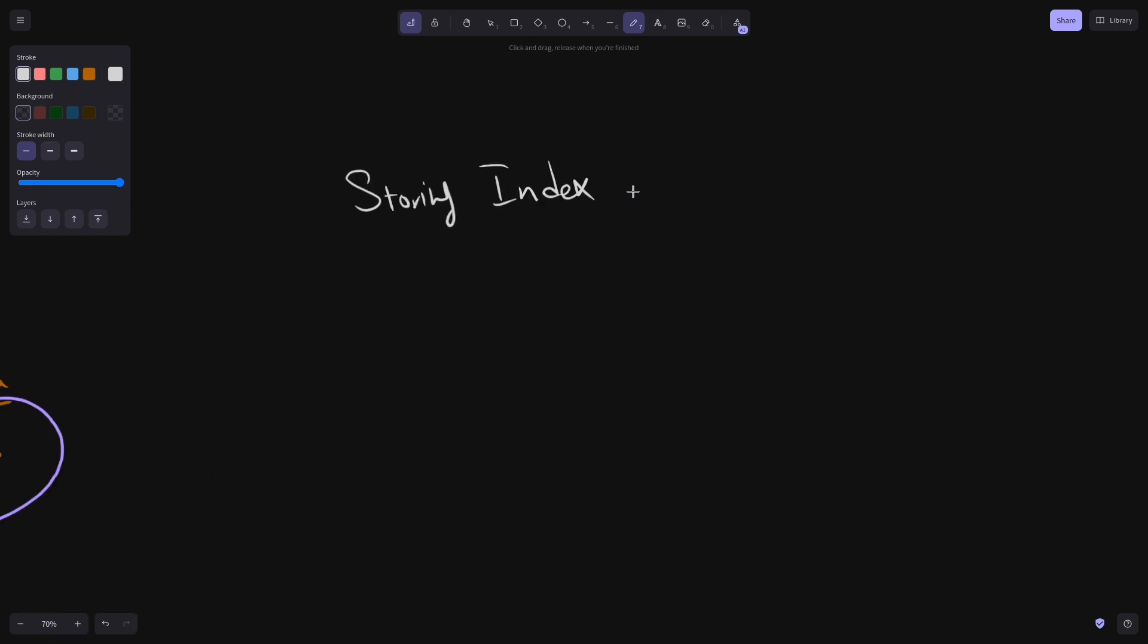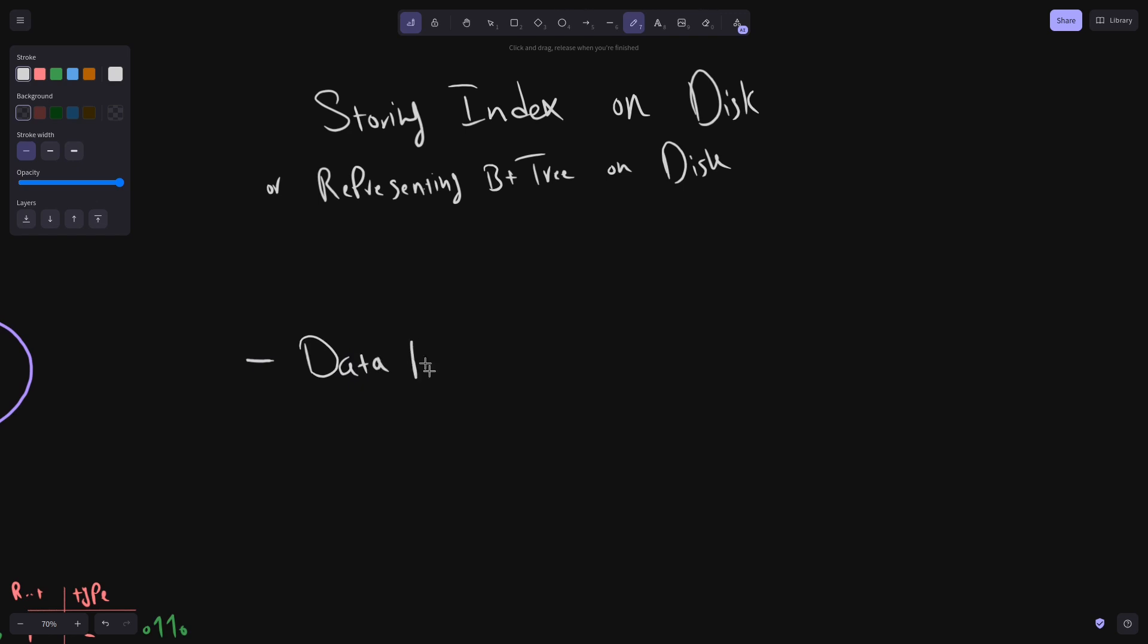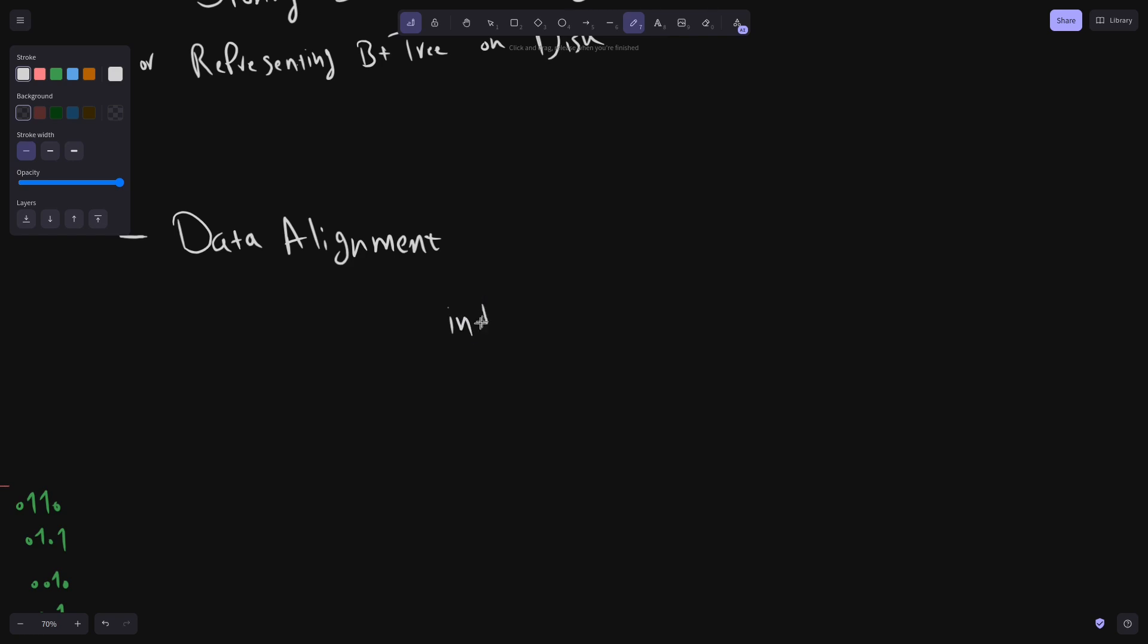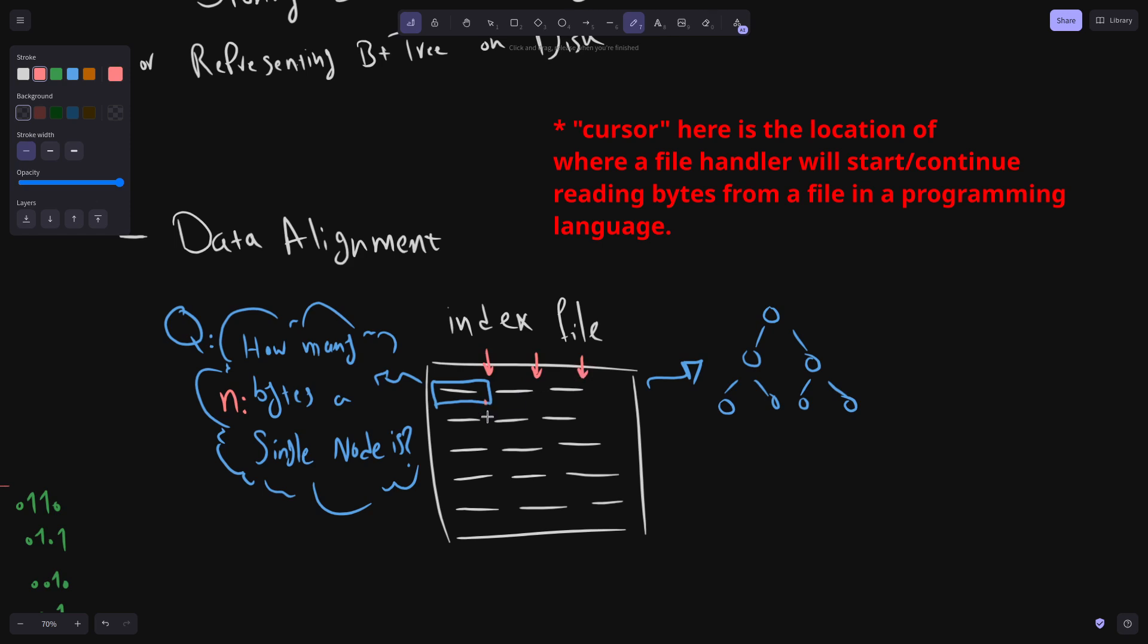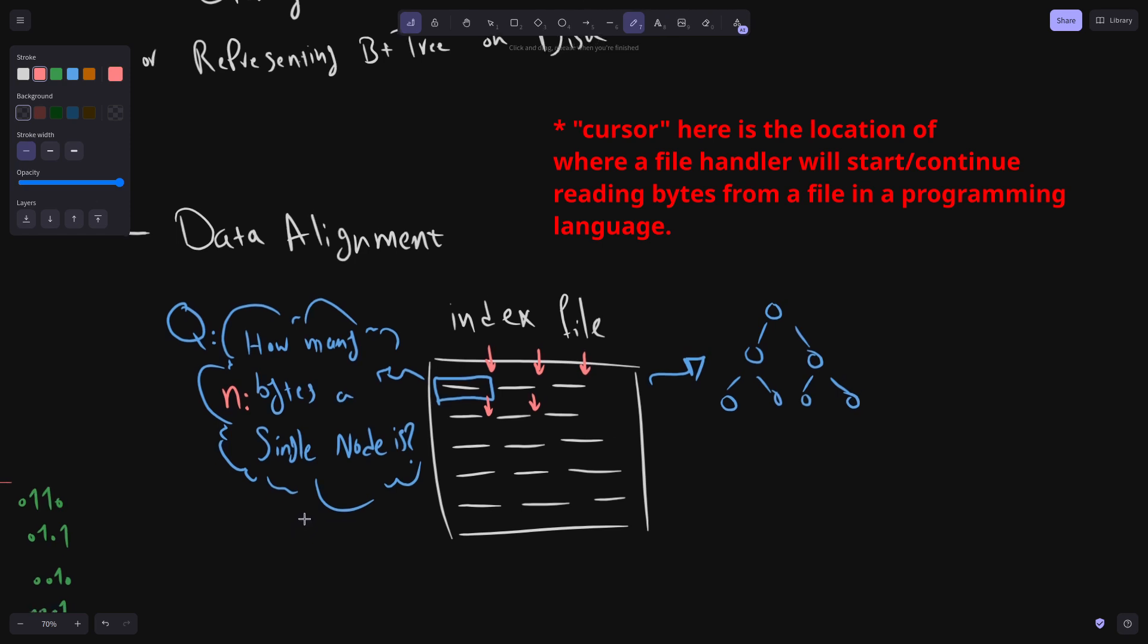In this video, we want to see how an index file, which may store one or multiple B plus trees is stored on disk. Our first topic is data alignment. And to understand this concept, we can say we have an index file, which is full of binary data. And the question is, how many bytes should we read from this file to access a single node?